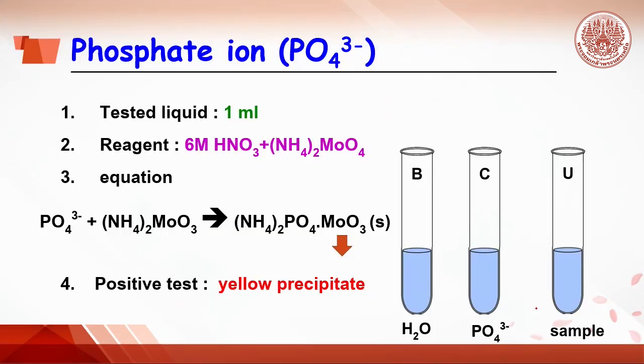In the case of phosphate ion testing, do the same by adding water, phosphate ion, and sample in the B tube, C tube, and U tube. Then, add the reagent by adding nitric acid, followed by ammonium molybdate.